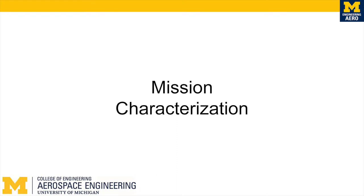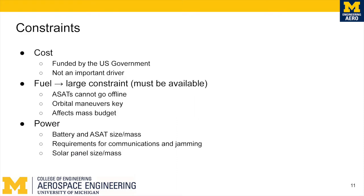Now on to the mission characterization. The three main constraints of our mission are cost, fuel, and power. The entirety of the cost will be the sole responsibility of the US government. With an exceedingly large budget, the government is able to expend a large amount of resources on this mission. ODAM will largely be utilized as a deterrent with minimal active operation of the ASATs taking place. Most of the ASATs will remain dormant and not use up much of their fuel over their lifespan, so they will not have to be replaced often. Due to these factors, cost was not a major design driver for our mission.